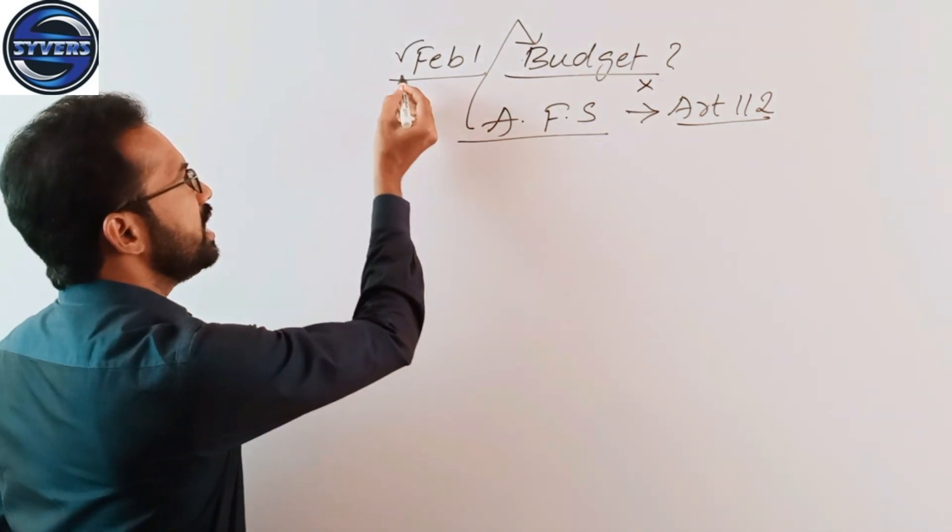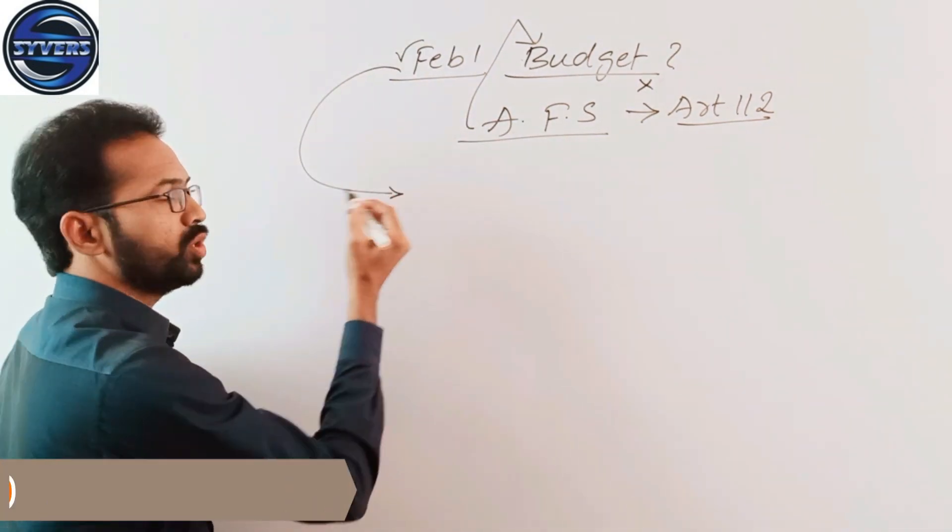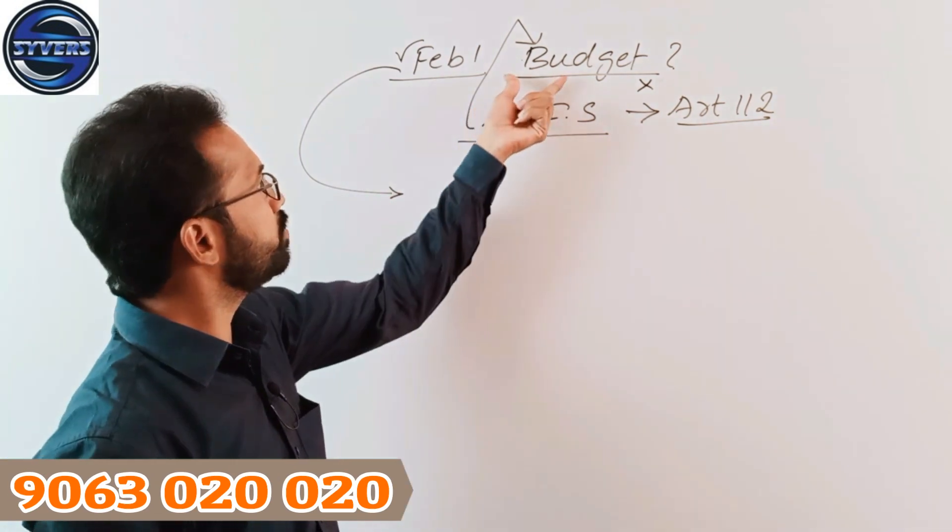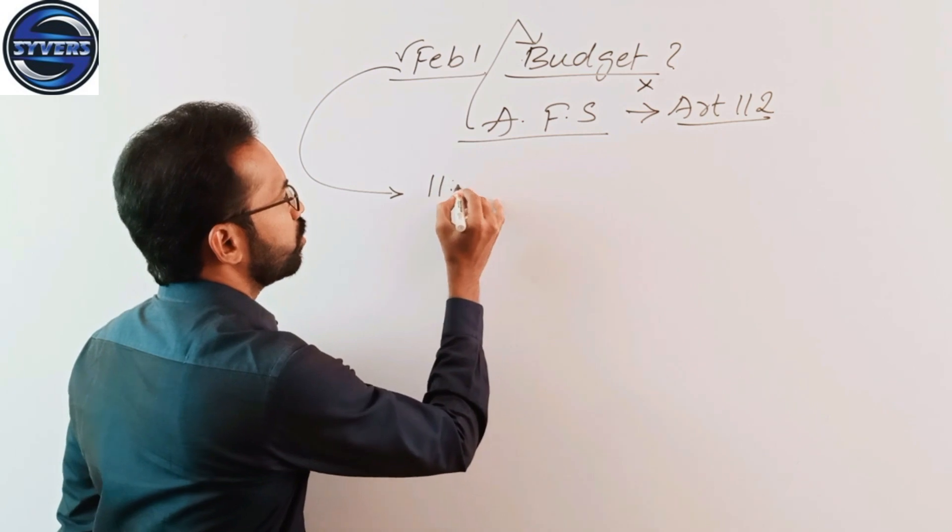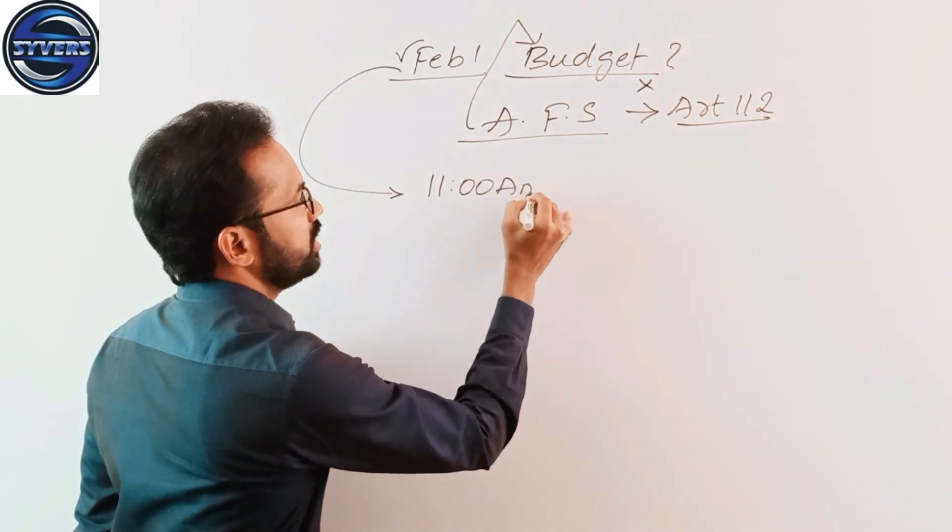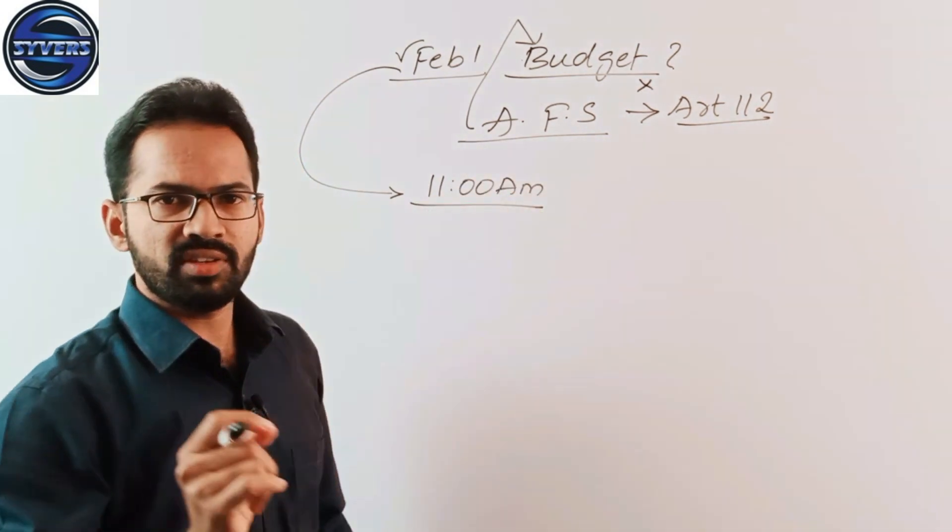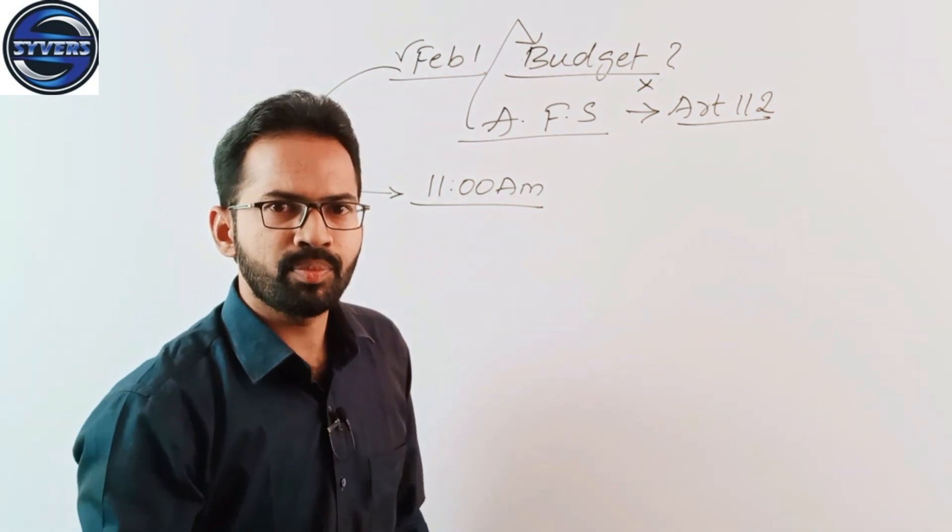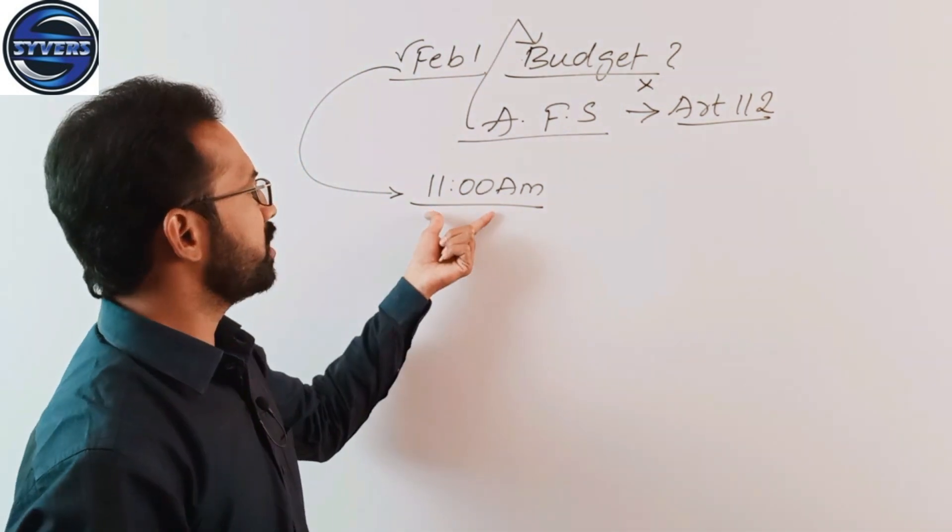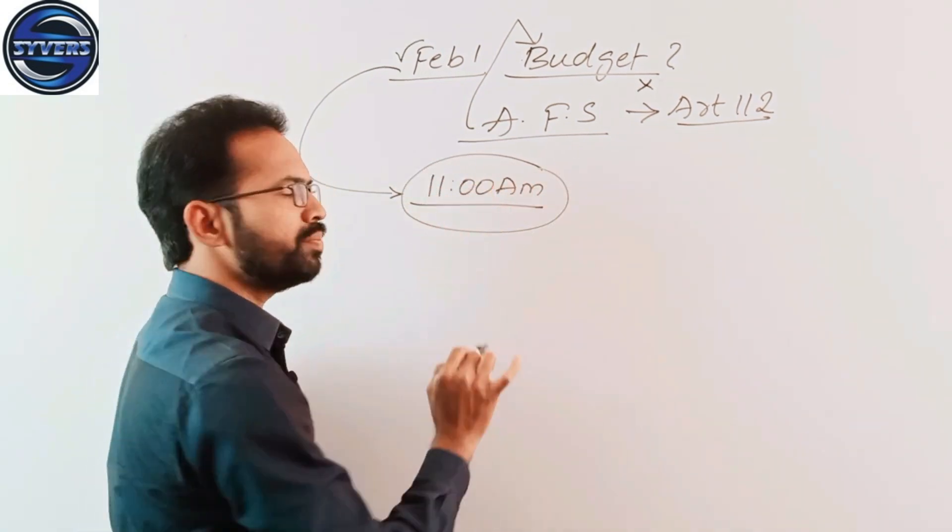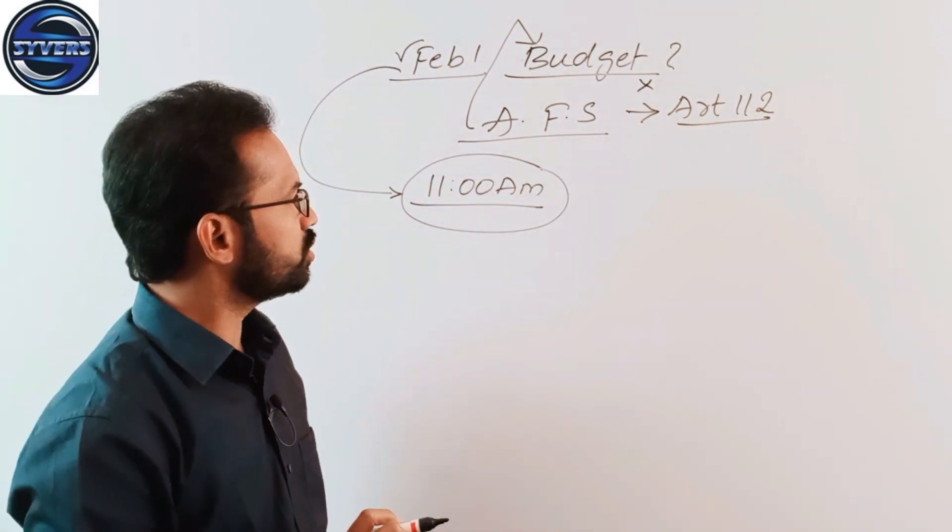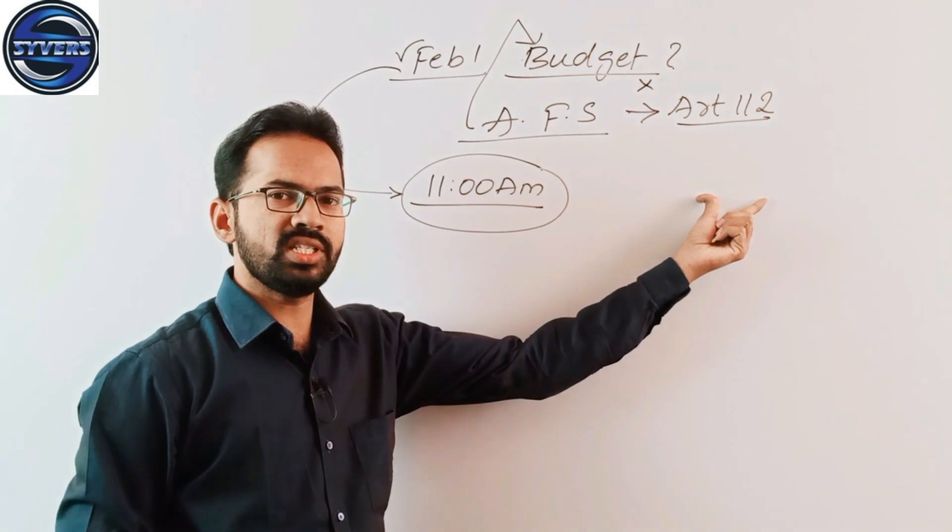Every year we are presenting budget on February 1st. When will this budget be presented in the parliament? At 11 AM. So February 1st, 11 AM, every year budget will be presented in the parliament.